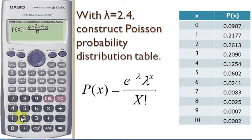with lambda to the power of x, that is 2.4 to the power of alpha x, and you have the x factorial, so alpha x factorial.